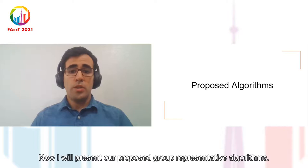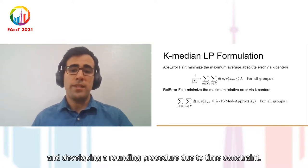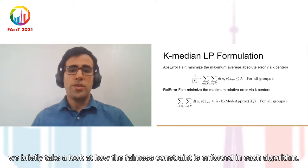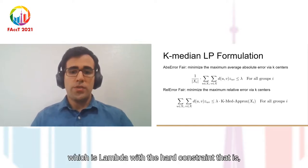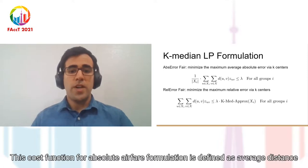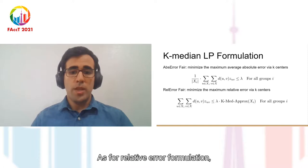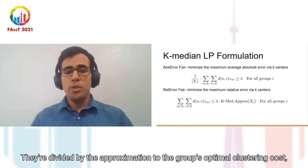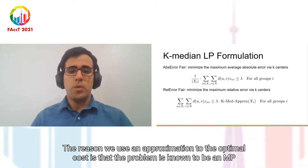Now I will present our proposed group representative algorithms. We designed fair k-median clustering algorithms for both absolute error and relative error cost functions by formulating it in a linear program relaxation and developing a rounding procedure. Due to time constraint, instead of going into details, we briefly take a look at how the fairness constraint is enforced in each algorithm. In both LP formulations, we minimize our objective function, which is lambda, with the hard constraint that it should not be smaller than the average cost for any group. This cost function for absolute error fair formulation is defined as average distance to cluster centers, which you can see in the top inequality. And for relative error formulation, the cost function is the absolute error divided by the approximation to the group's optimal clustering cost, which you can see in the bottom inequality. The reason we use an approximation to the optimal cost is that the problem is known to be NP-hard to solve.